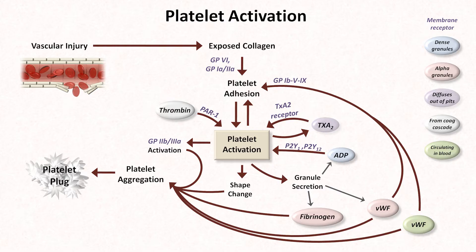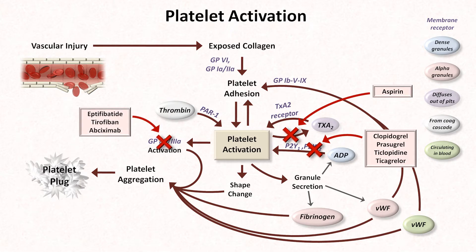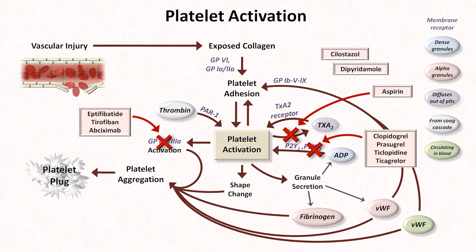Different medications interfere with this complex process at different points. For example, the most commonly prescribed antiplatelet drug, aspirin, inhibits the production of thromboxane A2. The P2Y12 inhibitors clopidogrel, prasugrel, ticlopidine, and ticagrelor all block the P2Y12 receptor. The GP2B3A inhibitors include three drugs: eptifibatide, tirofiban, and abciximab. The drugs dipyridamol and cilostazole are both phosphodiesterase inhibitors, which have somewhat more complex mechanisms partially involving modulating levels of cAMP and cGMP.